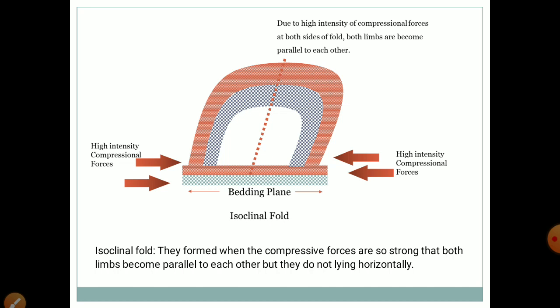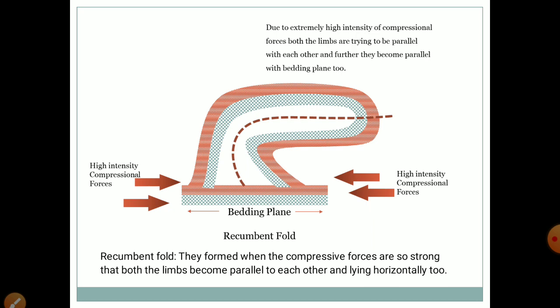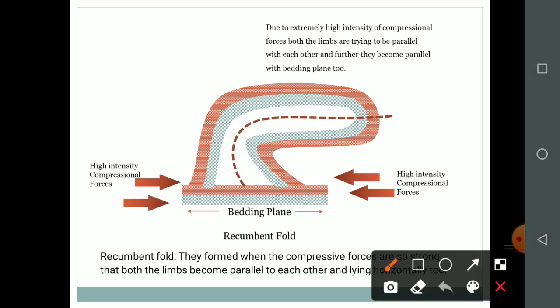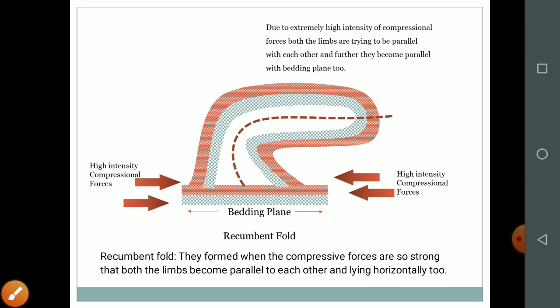The recumbent fold is the advanced stage of folding. It forms when the compressive forces are so strong that both limbs become parallel to each other and they are also lying horizontally — parallel to the bedding plane. Due to this intense type of folding, the fold collapses down, and that is why it is called a recumbent fold.